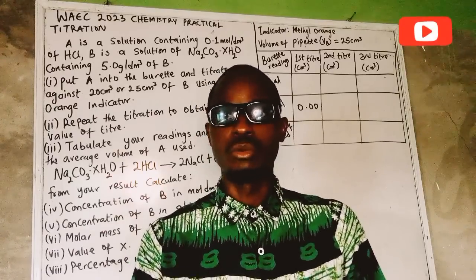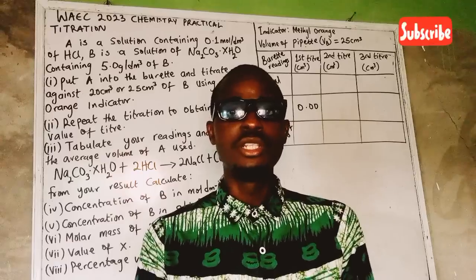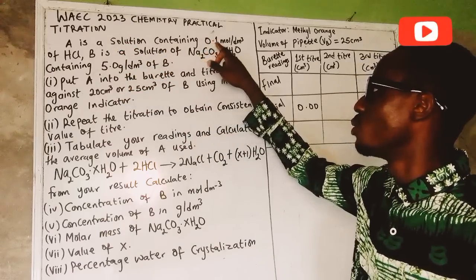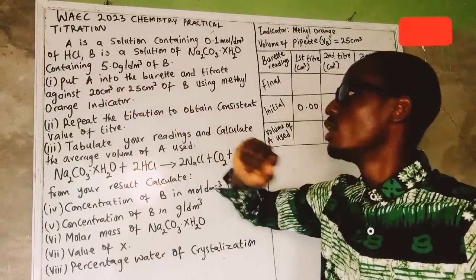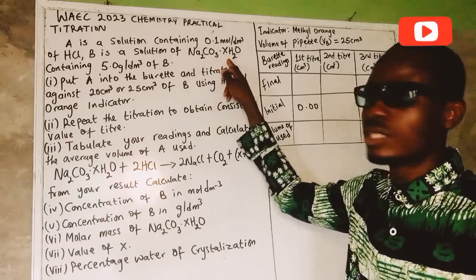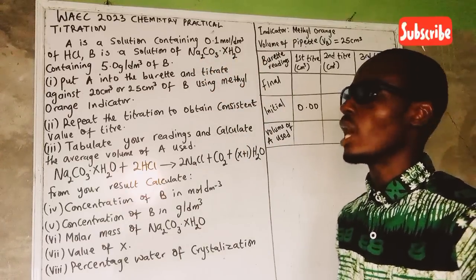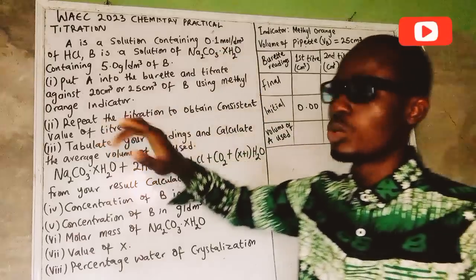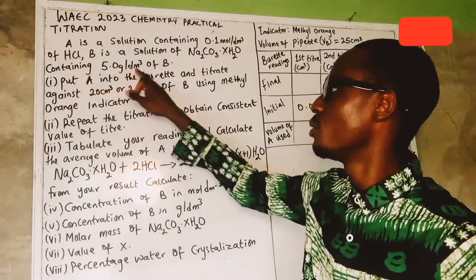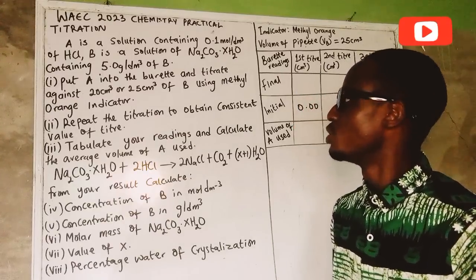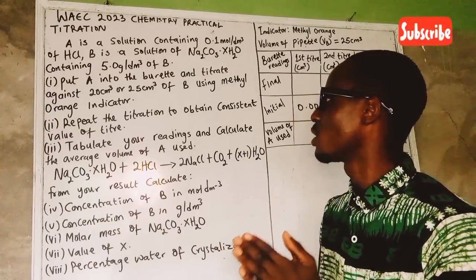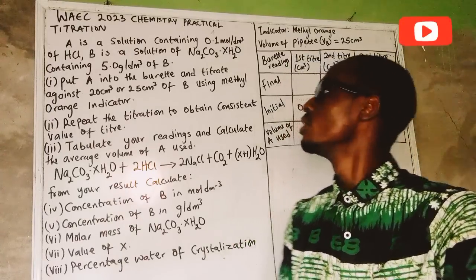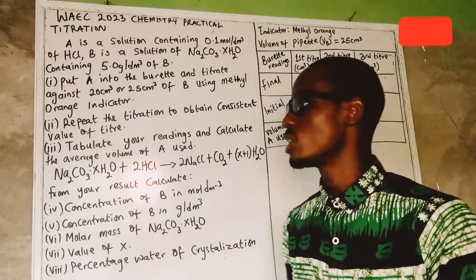Phenolphthalein is only used in this video because of unavailability of methyl orange, and this might cause a slight change in the practical. Now let's look at the question. We have solution A containing 0.1 mol per dm³ of HCl. Solution B is a solution of Na₂CO₃·xH₂O - we don't know the number of moles of water of crystallization present, but the mass concentration given is 5.0 grams per dm³. We are told to put A into the burette and titrate against 25 cm³ of B.